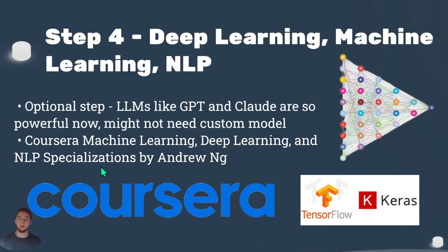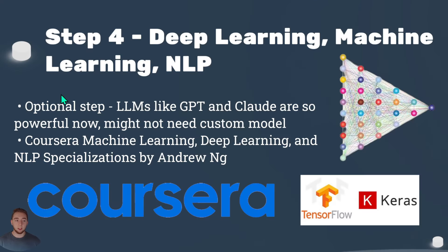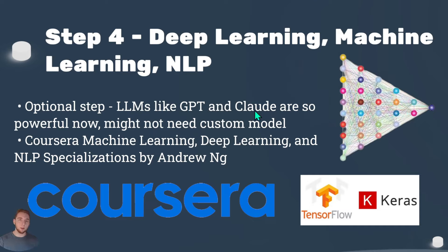Step four is deep learning, machine learning, and natural language processing (NLP). I actually marked this as an optional step, which might be a little controversial. The reason is that large language models like GPT and Claude are so powerful that a lot of the use cases you might want to develop can be done with them directly — there's not always a huge reason to train and create your own custom models. So this is really your own discretion, based on what you want to build.